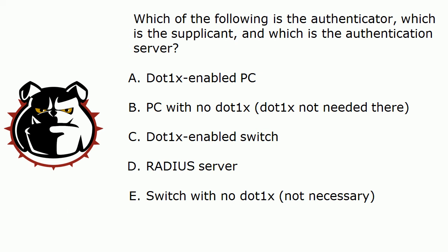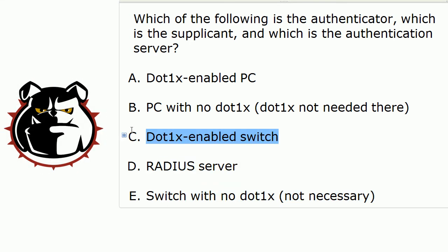Now if you want to pause the video and think about your answer, please do so now, because we're going to jump right into the answers. The authenticator device is actually the .1x enabled switch — that is our authenticator. The supplicant is the PC, and we have to have .1x running on that PC. That's a tricky detail you need to remember, because so often in Cisco networking we work on the switch, the router, the server — we really don't go to the PC very often. So it's easy to overlook that part on an exam question or in the real world. You've got to have a .1x enabled PC, and that is your supplicant.